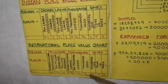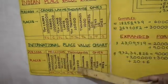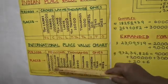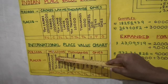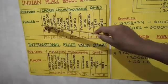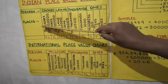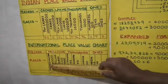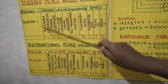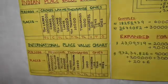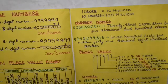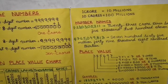Now we will compare the eighth and ninth places in the Indian and international place value charts. In the Indian place value chart, the eighth place is one crore; in the international chart, the eighth place is ten millions. It means one crore equals ten millions. In the same way, the ninth place in the Indian chart is ten crores and in the international system it is hundred millions, so ten crores equals hundred millions.